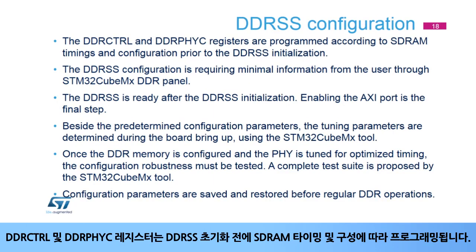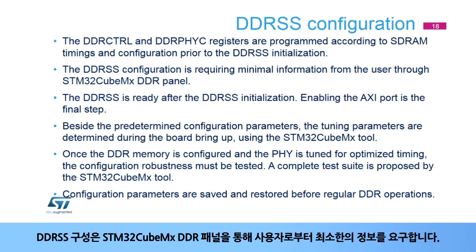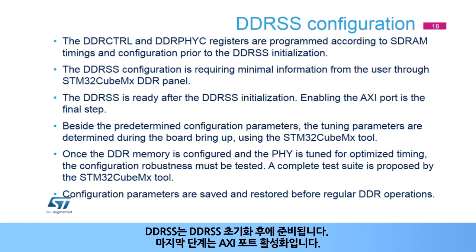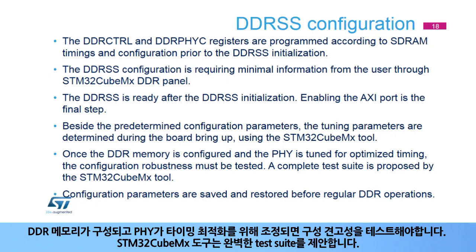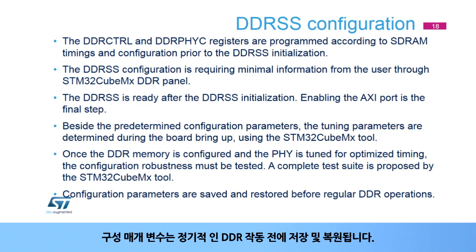The DDRCTRL and DDRPHYC registers are programmed according to SDRAM timings and configuration prior to DDRSS initialization. The DDRSS configuration requires minimal information from the user through the STM32CubeMX DDR panel. The DDRSS is ready after initialization, and enabling the AXI port is the final step. Besides predetermined configuration parameters, tuning parameters are determined during board bring-up using STM32CubeMX. Once configured and tuned, configuration robustness must be tested using the complete test suite proposed by STM32CubeMX. Configuration parameters are saved and restored before regular DDR operations.